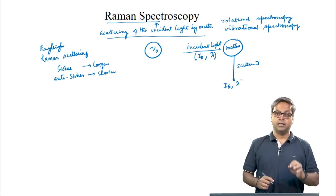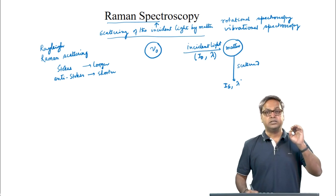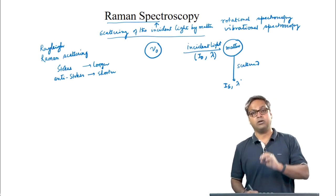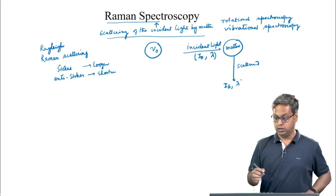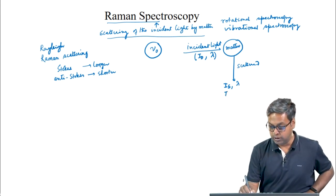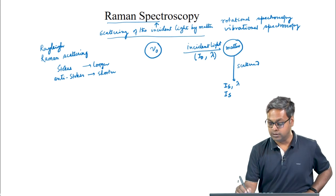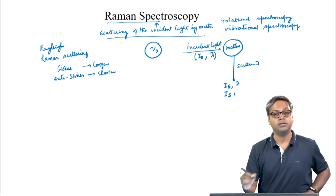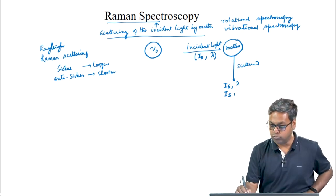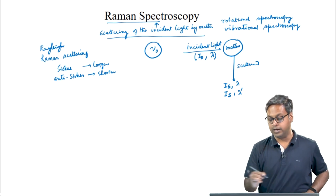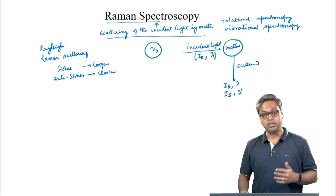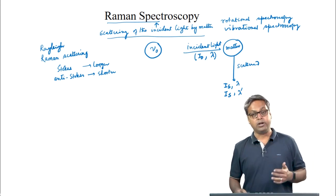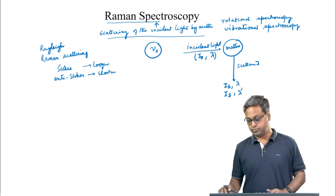Raman showed that scattered frequencies are also present. In other words, Raman showed that Iₛ — the intensity of the scattered light — can also have wavelengths other than that of the incident light, and this is known as Raman scattering.